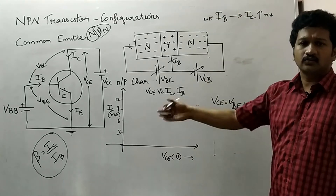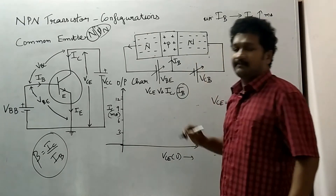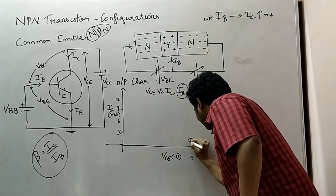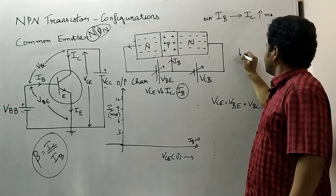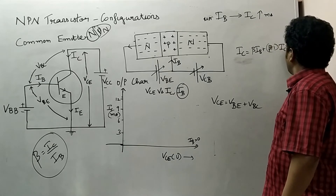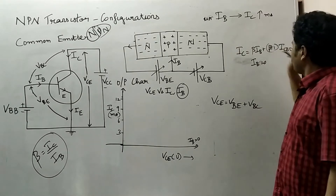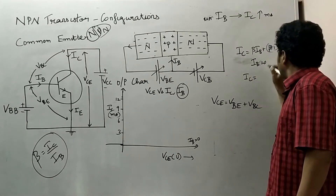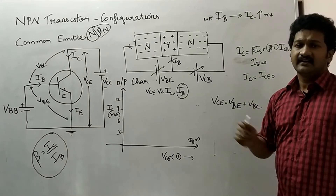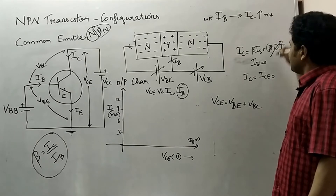Let's start to analyze the characteristics curve. First, we are setting IB to zero. IB is the parameter which has to be kept constant at each step where we want to study the curve of VCE and IC. Using the expression IC = β·IB + (β+1)·ICBO, if IB equals zero, IC will equal ICEO, meaning there will be only a small reverse saturation current flowing through the NPN transistor and no forward current.